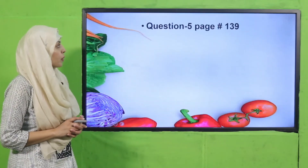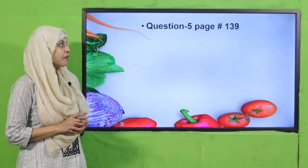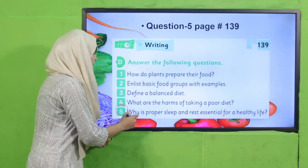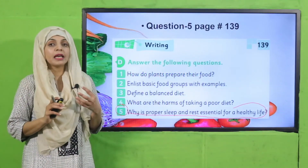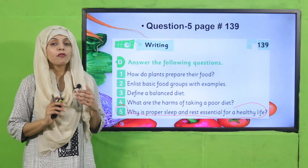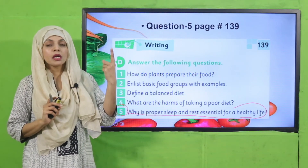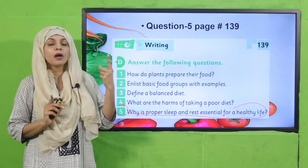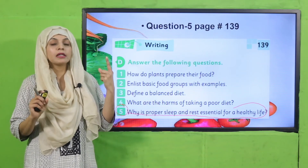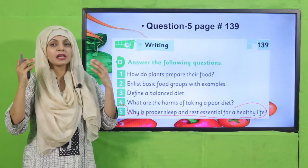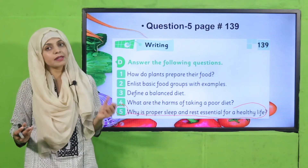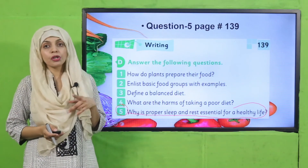Now we will move forward to page number 139, question number 5, in writing practice: why is proper sleep and rest essential for healthy life? Because when we take deep sleep, our organs and different body parts relax and rest, and our brain also takes rest. When we get up, we work more efficiently and effectively. You will do this question in your notebooks for homework.